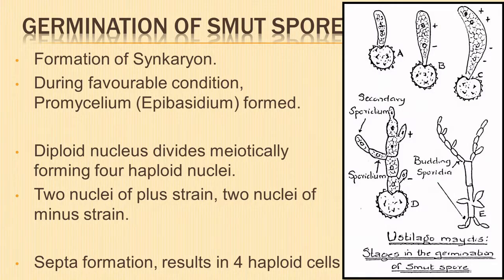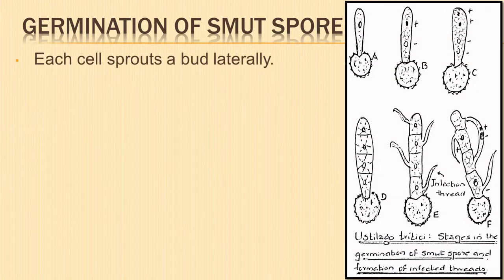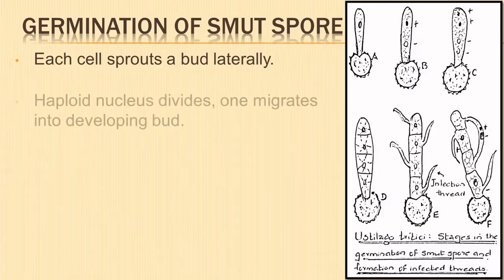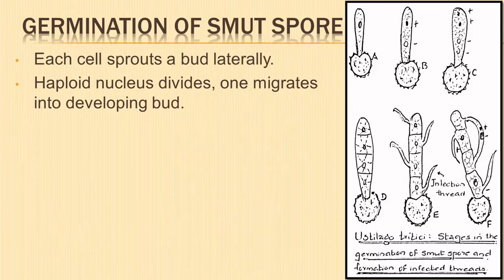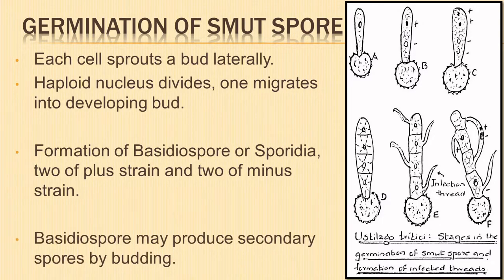The nuclei are arranged in rows, and with the development of three transverse septa, the epibasidium or promycelium is composed of four haploid cells. Each cell sprouts a bud laterally towards its upper end. In each cell the haploid nucleus divides mitotically into two daughter nuclei; one remains in the cell while the other migrates into the developing bud. These uninucleate buds form the basidiospores or sporidia — two of plus strain and two of minus strain.